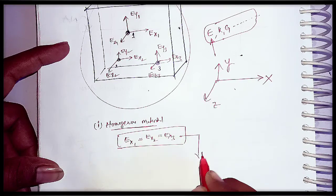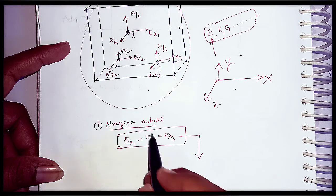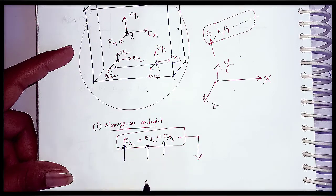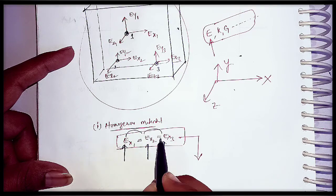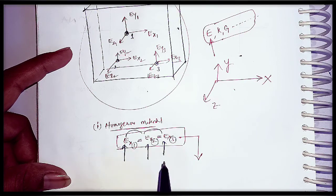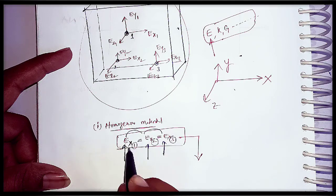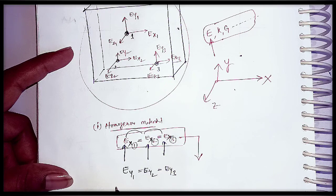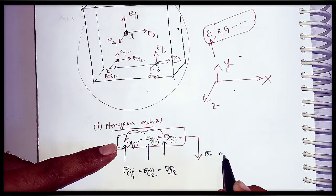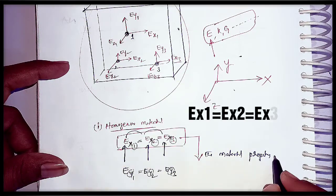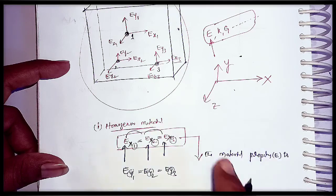From this condition I will define the homogeneous material. Here E is a material property. I am equating the property at x1, x2, and x3 — that means at different points. At different points in a particular direction, which is the x direction, the material property is equal. We can also write it as Ey1 = Ey2 = Ey3, meaning in the y direction all material properties are equal at different points.